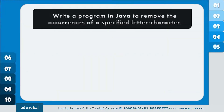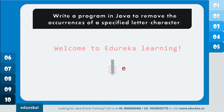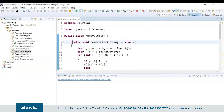The next program says: write a program in Java to remove the occurrences of a specified letter or character. In the given statement, say I want to remove the specified character 'e.' I have used a remove char method and passed parameters as string s and char c, and have initialized the count to zero.